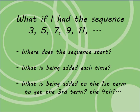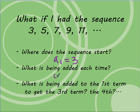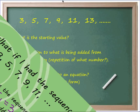We want to find a better way. We're going to use the sequence 3, 5, 7, 9, 11, which goes on forever. Where does the sequence start? We say our initial term is 3. What's being added each time? That's the common difference — our common difference this time is 2. So from my first term, what am I adding to get to the second, third, fourth term and so on? Let's take a look.